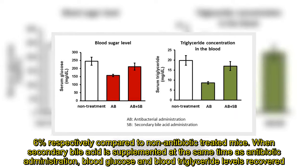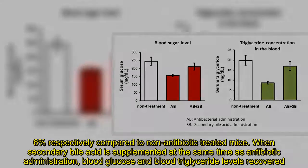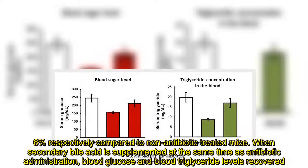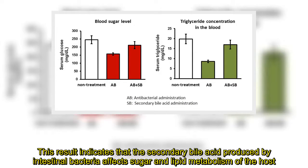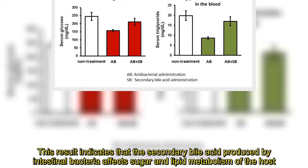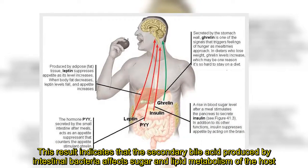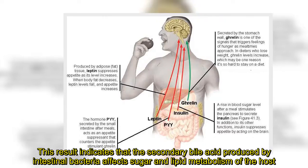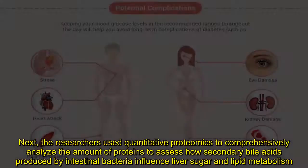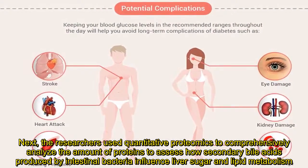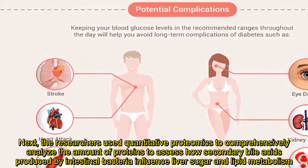When secondary bile acid was supplemented at the same time as antibiotic administration, blood glucose and blood triglyceride levels recovered. This result indicates that the secondary bile acid produced by intestinal bacteria affects sugar and lipid metabolism of the host. Next, the researchers used quantitative proteomics to comprehensively analyze the amount of proteins to assess how secondary bile acids produced by intestinal bacteria influence liver sugar and lipid metabolism.